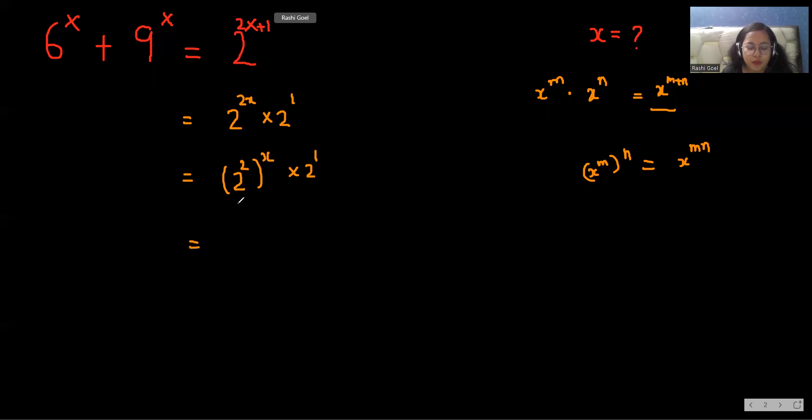So 4^x multiply 2. So our equation is 6^x + 9^x = 4^x multiply 2.